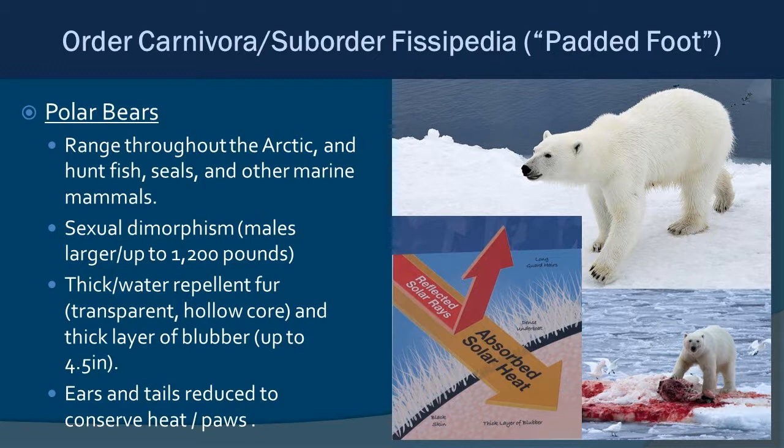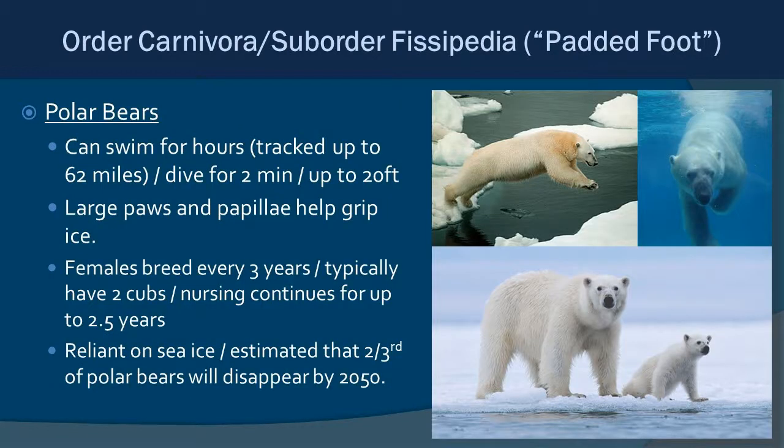Even their ears and tails are reduced in size to minimize heat loss. Polar bears are capable swimmers — we've tracked them up to about 62 miles of swimming — but they are not great divers; they can stay down for about two minutes and only dive to about 20 feet. Their paws have papillae on the bottom to grip ice, and they are very large to spread weight on thinner ice.